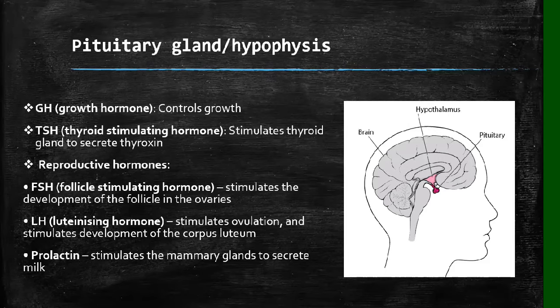The thyroid stimulating hormone, as the name tells us, stimulates the thyroid gland to secrete thyroxin, which is a very important hormone because it controls the basic metabolic rate. As we know, metabolism is a very important process in our body because during metabolism, oxygen and other nutrients are used to form ATP, which is the energy that we need.